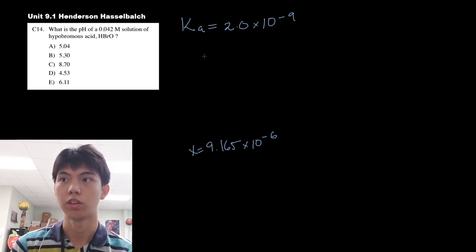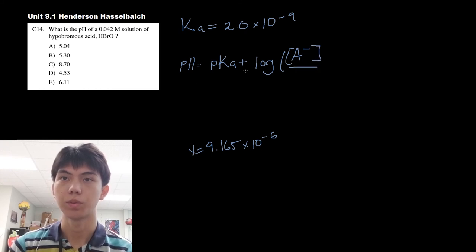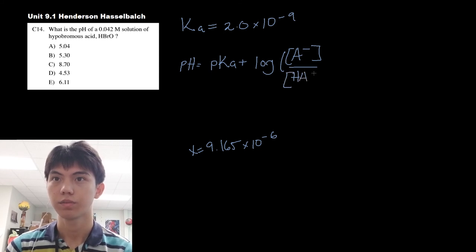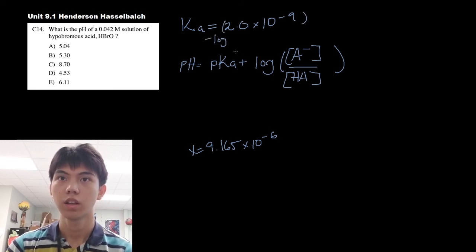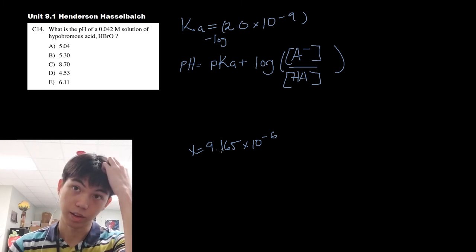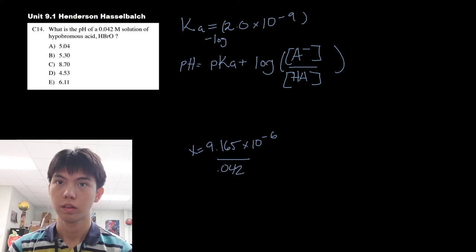There's an equation, the Henderson-Hasselbalch equation. It basically states that the pH of something is equal to the pKa, which is just the pH of your Ka, and you add the log of your anion with your actual acid. So we're given all of this so far because we're given pKa, which is just your negative log of your Ka. So negative log of this, and you take the log of your anion, which is right here, your 9.165, and you divide that by your HA, which is 0.042.